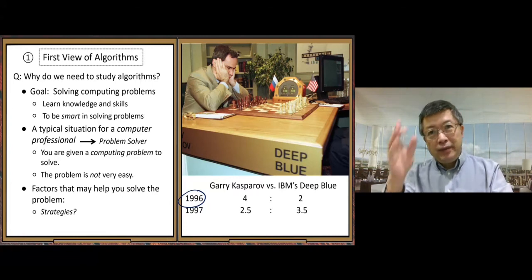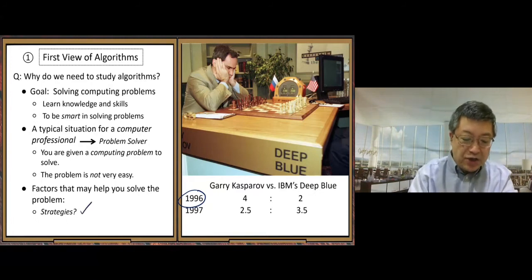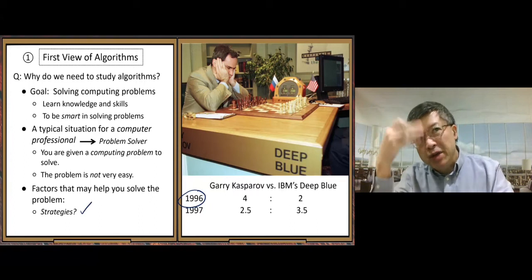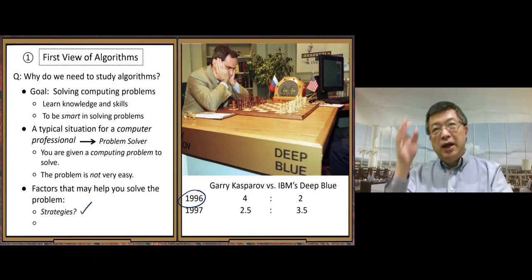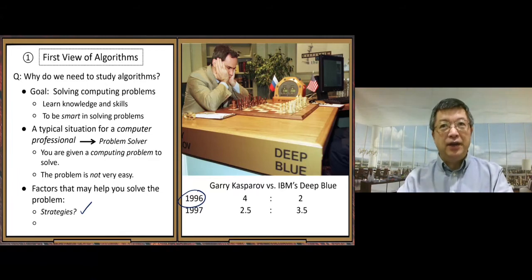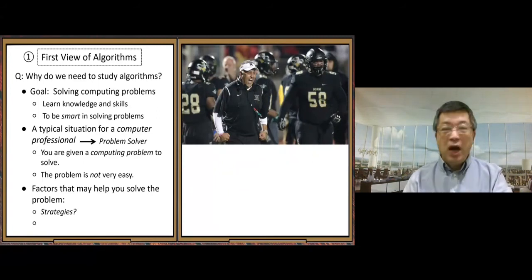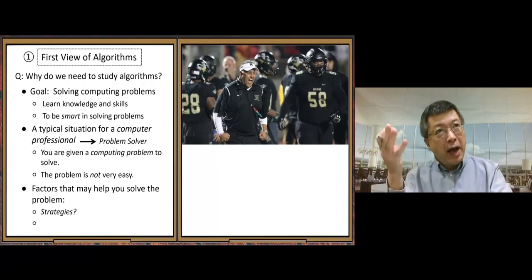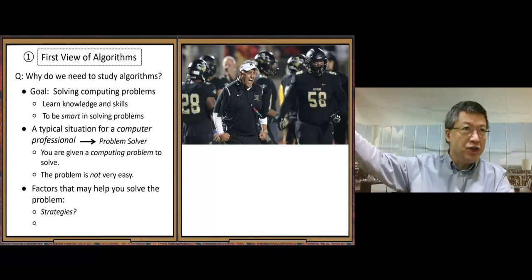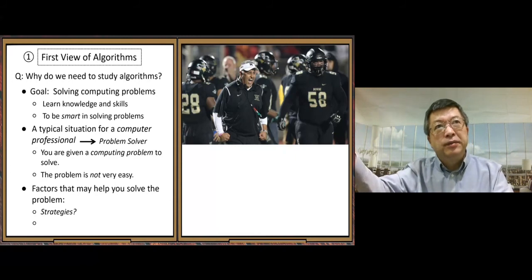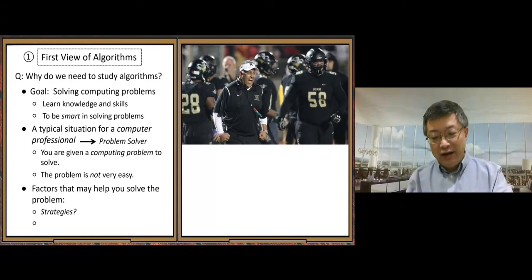So from that, next, we want to see another factor, other than strategies, another important factor we want to look at. To see that, another important factor. Here, I just bring you another special situation in football games. Sometimes a coach could be very mad at his players. Although that coach developed very good strategies, but at the end, still his players cannot deliver. That could happen. For example, in this situation.